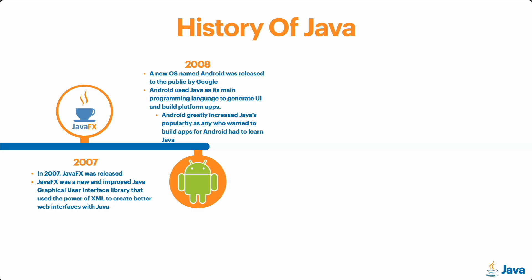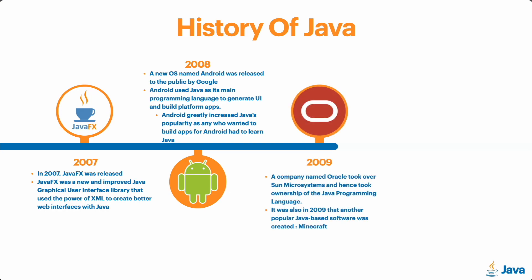The final major event for Java came in 2009 when a company named Oracle took over Sun Microsystems and hence took over ownership of the Java programming language. Also in 2009, a popular Java-based software was created: Minecraft. Minecraft is actually based on Java, and you can write Java code to create your own mods in Minecraft, which is pretty cool. Java is still being developed today, with new versions released regularly — Oracle still supports and develops Java.